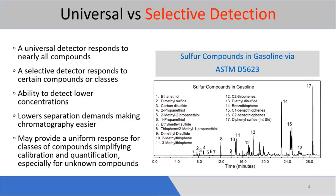Selective detectors may provide a uniform response for classes of compounds, simplifying calibration and quantification, especially for unknown compounds. The chromatogram on the right is from the analysis of a gasoline sample that contained 30 parts per million of sulfur. Even though we might not be able to identify each individual compound, we can obtain a measure of the total sulfur in the sample by summing the response from all peaks, and of course we can quantify each peak individually.